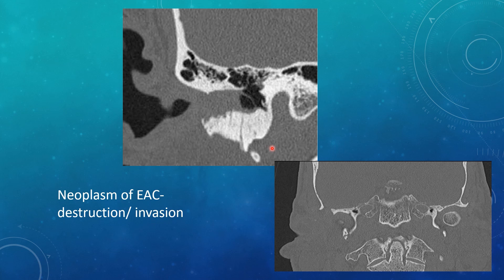Here's a neoplasm of the external auditory canal. You see all this abnormal soft tissue within the EAC, then a subtle erosion of the cortical surface. On the coronal view, you can actually see a defect within the temporal bone at the level of the external auditory canal, where this destructive process has invaded into the middle cranial fossa. This could be infection or neoplasm — in this case, it ended up being an adenocarcinoma of the ceruminous or wax glands.